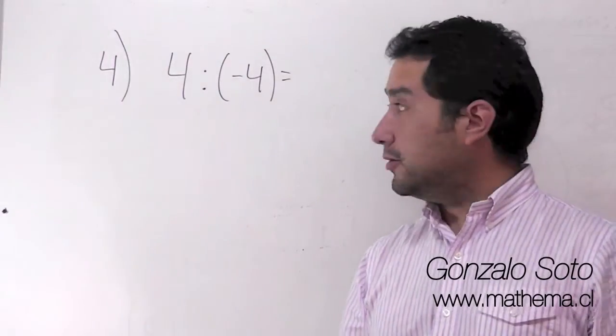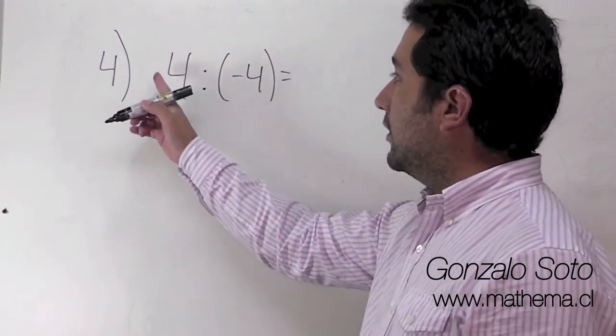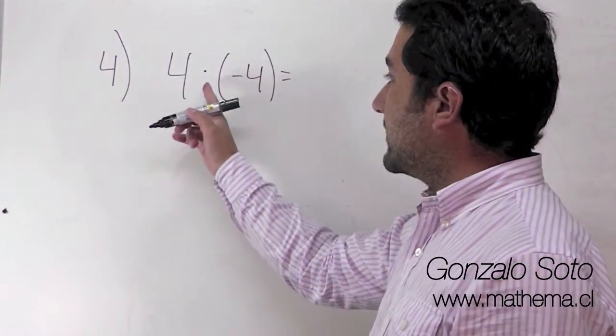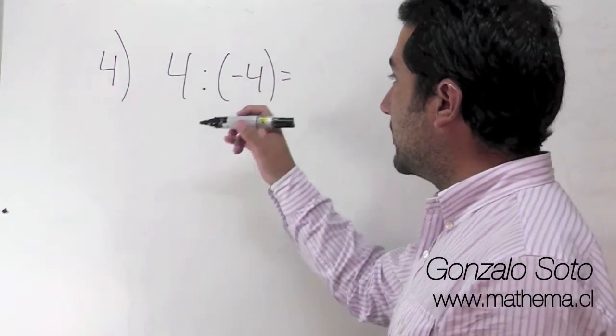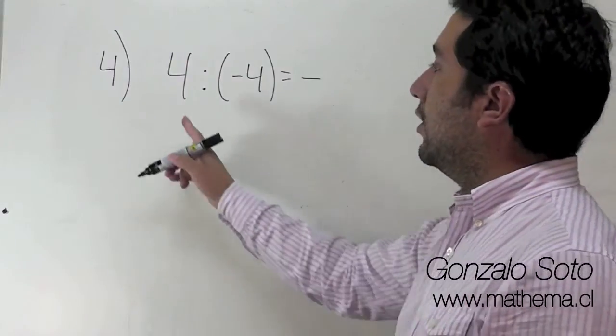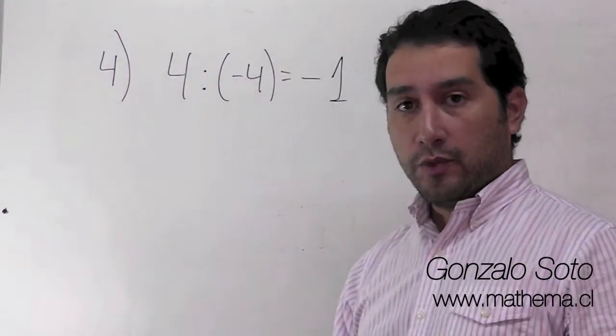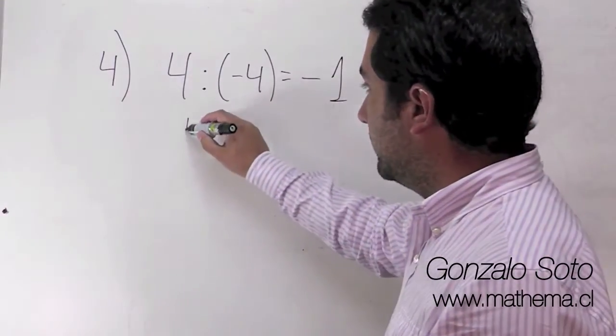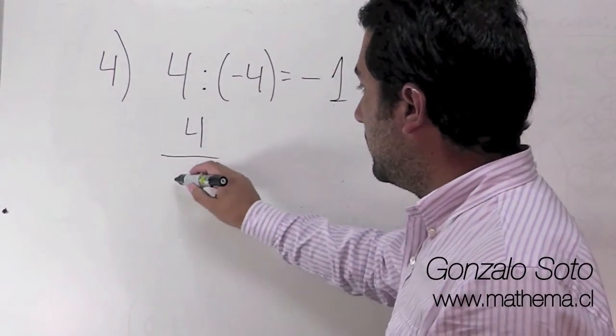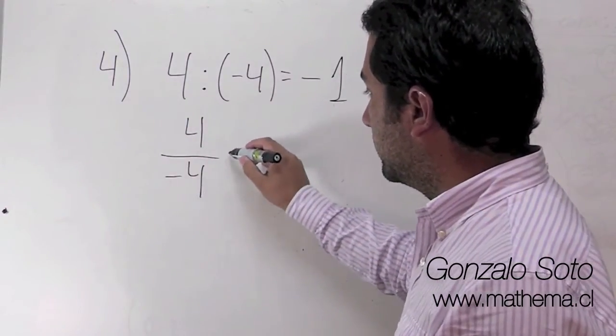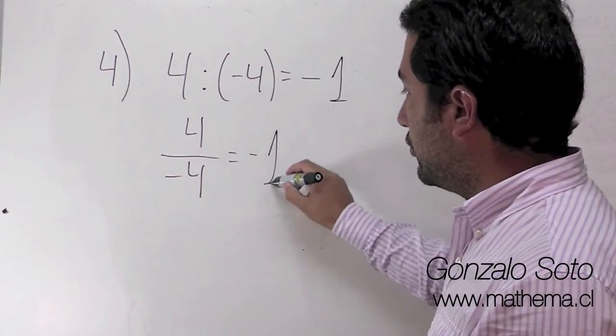En el ejercicio 4 tenemos un positivo y un negativo que se están dividiendo. Por lo tanto, el resultado es negativo. 4 dividido en 4 es 1. ¿Cómo se puede escribir también? 4 dividido en menos 4, que me da menos 1 también.